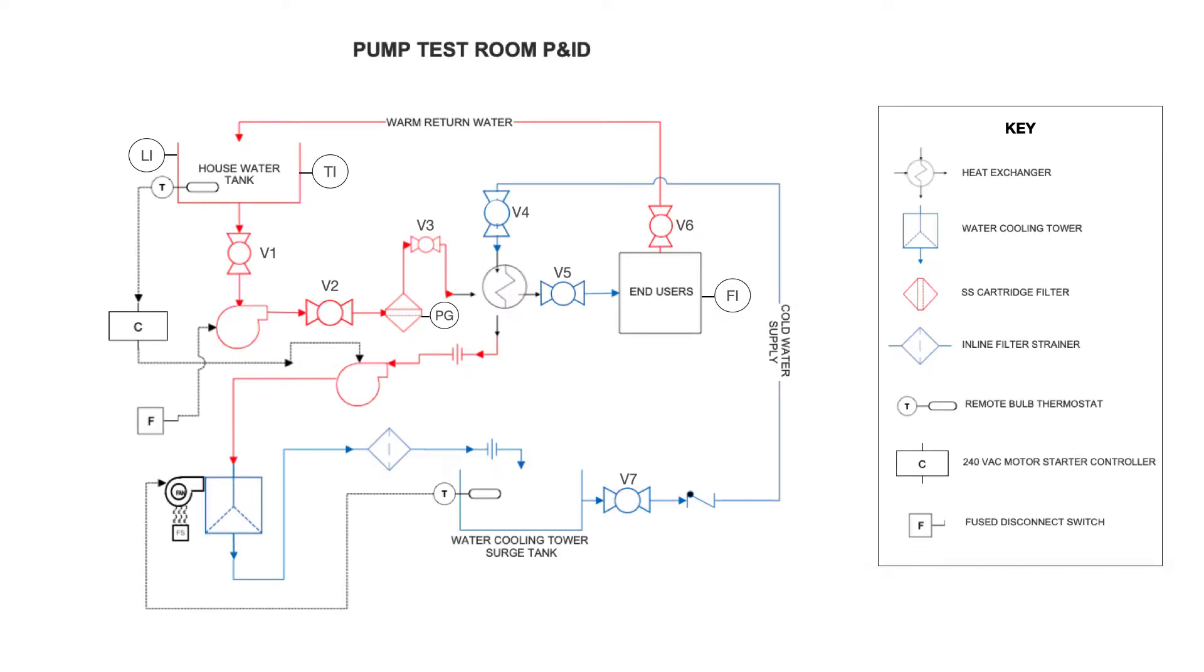So here's an example of a P&ID of a pump test room. You can see we have a house water tank in the upper left-hand corner, followed by a ball valve that goes to a pump, to another ball valve, to a filter housing, cartridge style filter, to another ball valve.